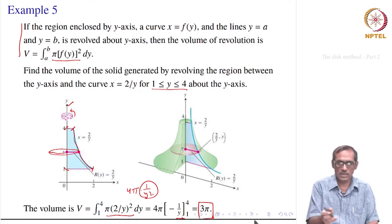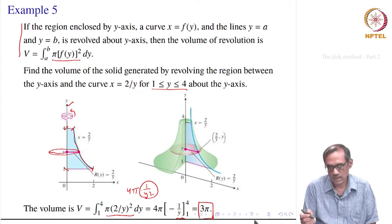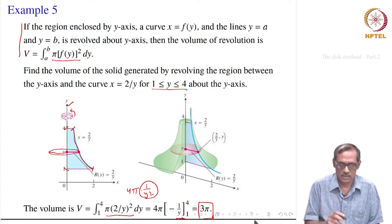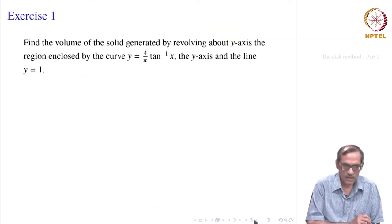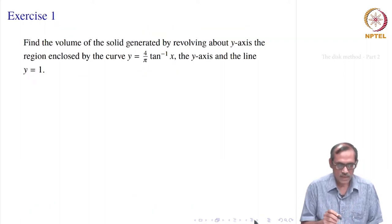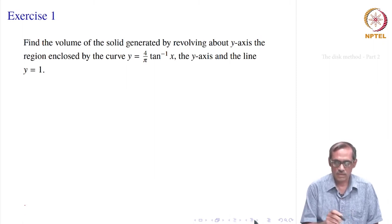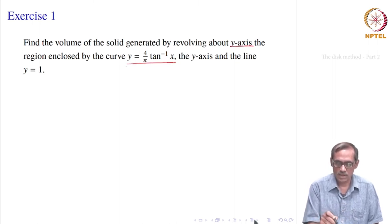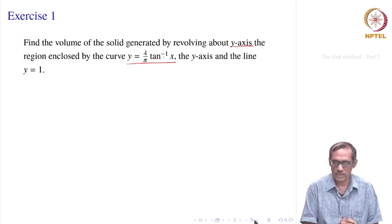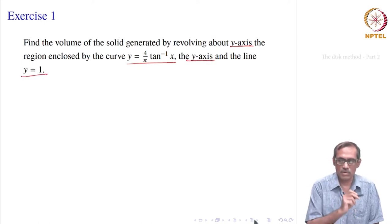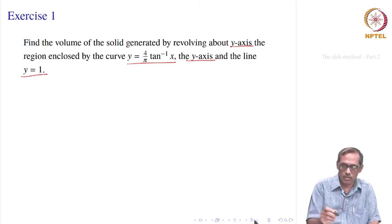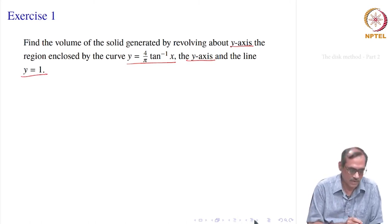Now let us see one more problem. Find the volume of the solid generated by revolving about the y-axis the region enclosed by the curve y equal to (4/π) tan⁻¹ x. The curve is given as y = f(x), but we are revolving about the y-axis. The region is bounded by y = (4/π) tan⁻¹ x, the y-axis, and the line y = 1. Everything is given in terms of y, and the curve being given as y of x should not be a problem.